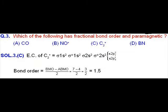Question number 3 is based on molecular orbital theory of diatomic compounds. In option C it is C2 plus which is having in the valence shell 5 plus 6, 11 electrons. So it should be having fractional bond order and should be paramagnetic in nature.